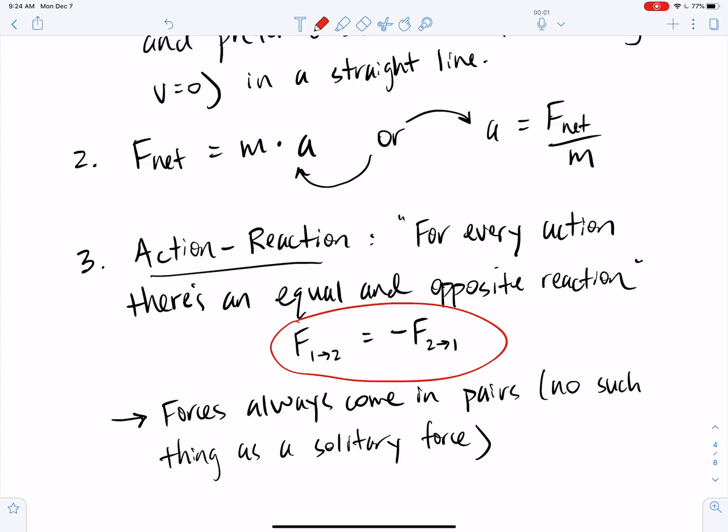So every applied force on one object is coupled with an applied force in the opposite direction on the other object, okay? And by the way, those forces do not cancel each other out because they're on different objects. If the forces were on the same object, they would cancel each other out, but they're on different objects, so they don't cancel.